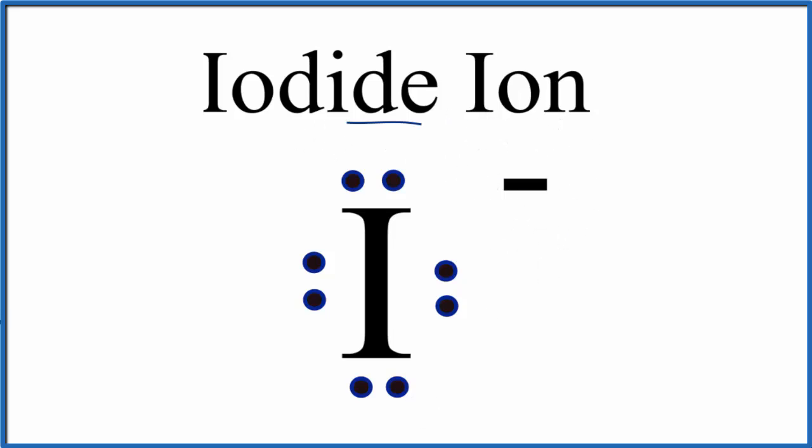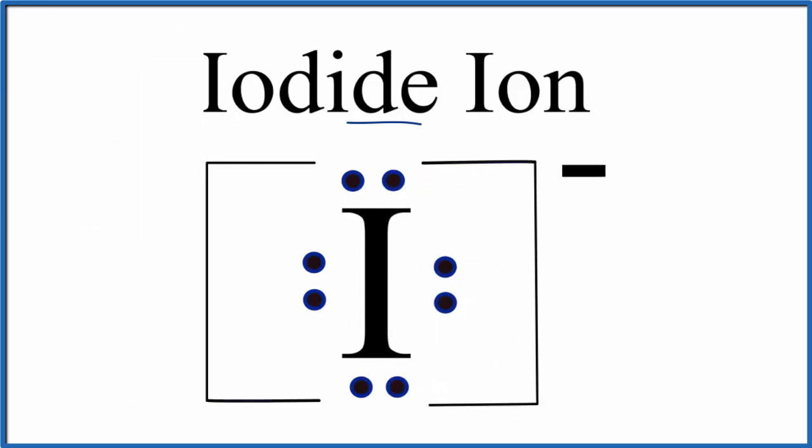We should also put brackets around our iodide ion. And we're done. This is the Lewis structure for I-, the iodide ion. This is Dr. B, and thanks for watching.